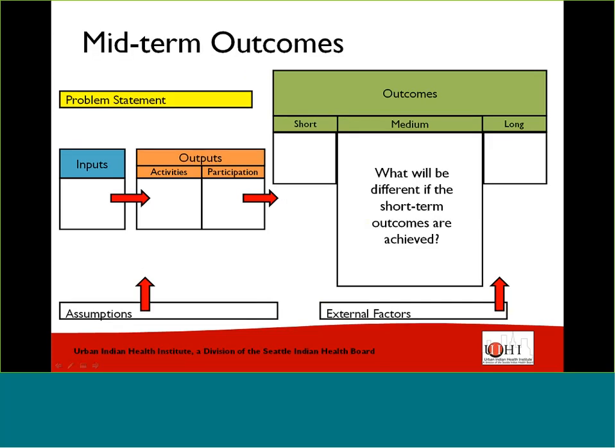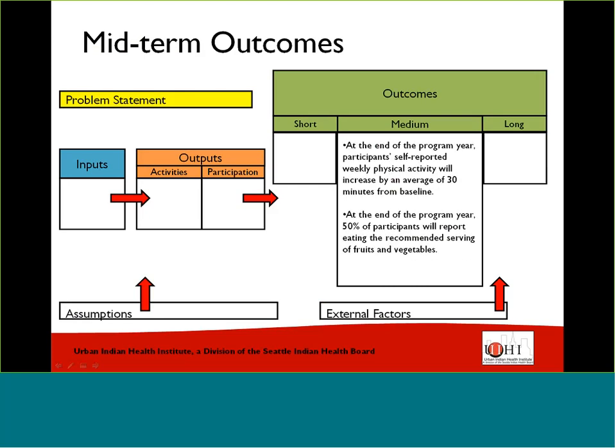Medium-term outcomes build on the short-term outcomes. They identify what we want to see participants do with the new knowledge, skills, and attitudes — in other words, the lifestyle changes we hope will occur. For example, at the end of our program year, participants' self-reported weekly physical activity will increase by an average of 30 minutes from baseline. Or at the end of the program year, 50% of participants will report eating the recommended serving of fruits and vegetables. These are steps on the way to the long-term outcomes.